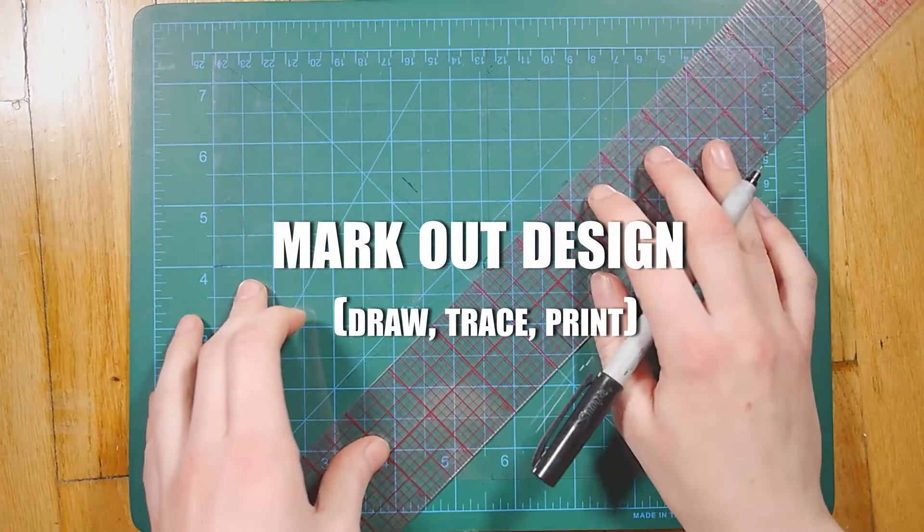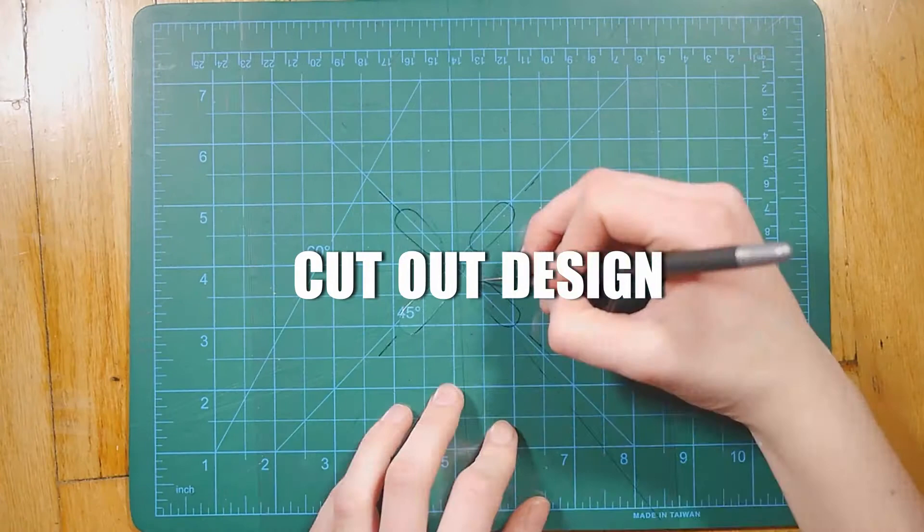It might be a better idea for you to have a portion of the next repeat on the stencil so you can line up the next repeat according to that.